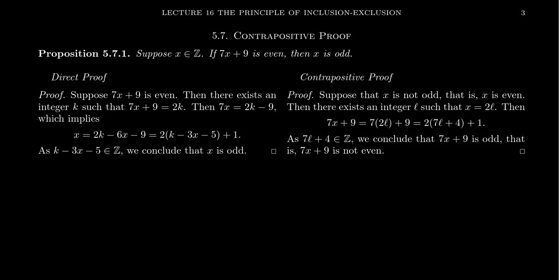Recall that for a conditional statement P implies Q, its contrapositive is the statement not Q implies not P. These statements are logically equivalent to each other — in terms of logic, these two are the same thing. We would say that they're equal to each other.